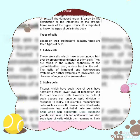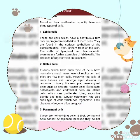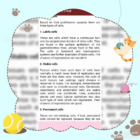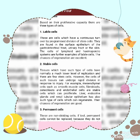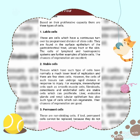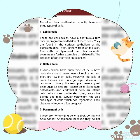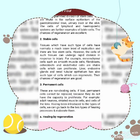The second type is stable cells. Tissues which have such cells normally have a much lower level of proliferation and there are few stem cells. However, cells of such tissues can undergo rapid division in response to injury. For example, mesenchymal cells such as smooth muscle cells, fibroblasts, osteoblasts, and endothelial cells are stable cells which can proliferate. Liver, endocrine glands, and renal tubular epithelium also have such cells which can regenerate. Their chances of regeneration are good.